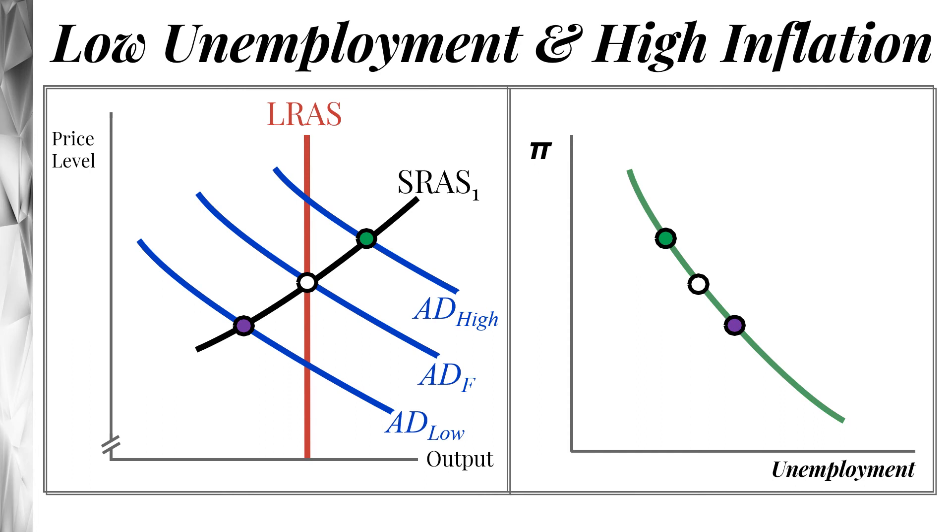As you move aggregate demand back, you move down and to the right along the Phillips curve, right? So we have these corresponding relations between where we're pushing aggregate demand and where we're at on the Phillips curve.